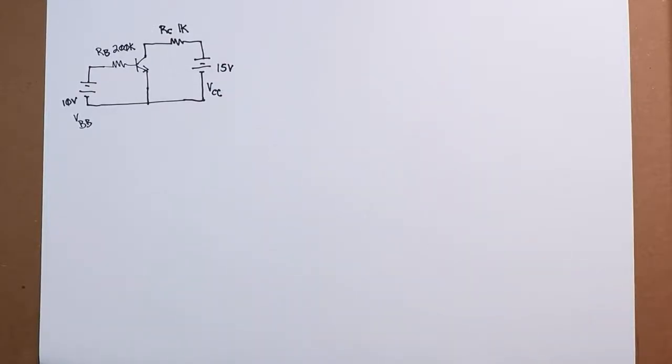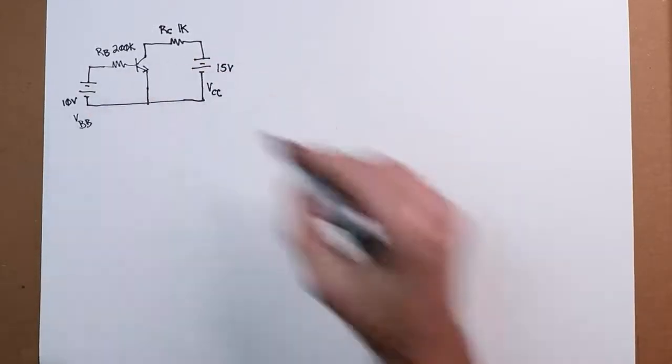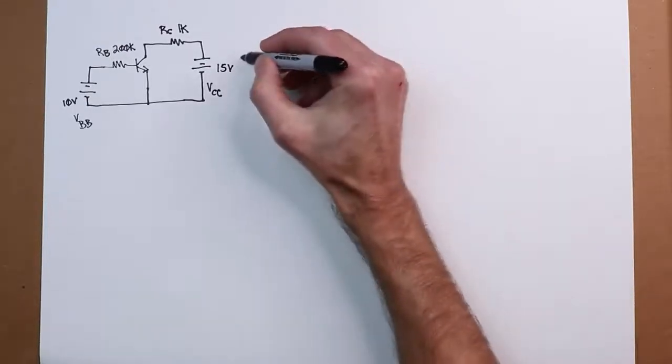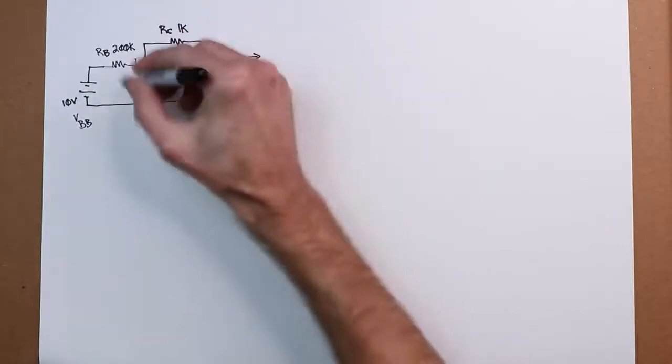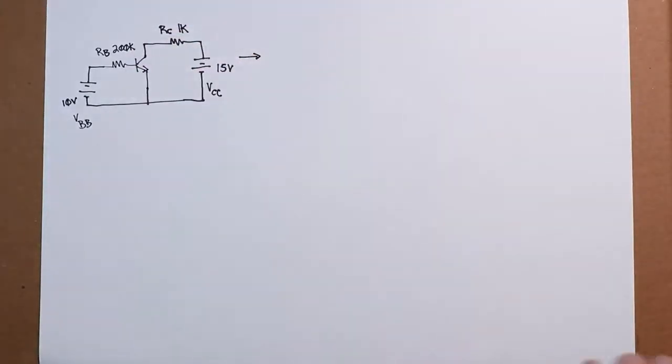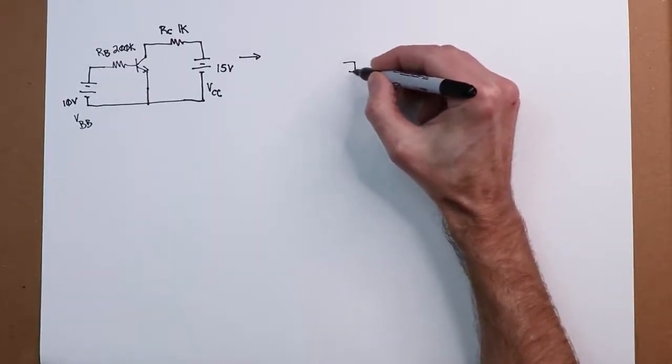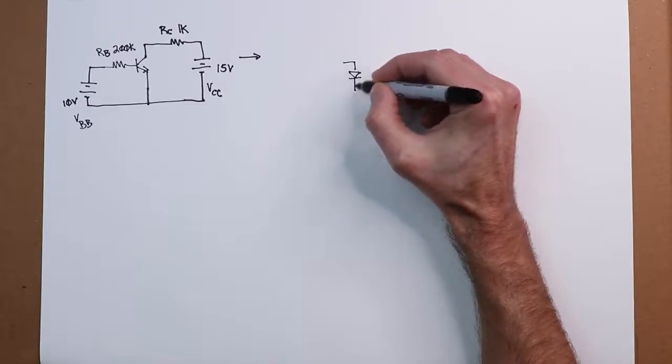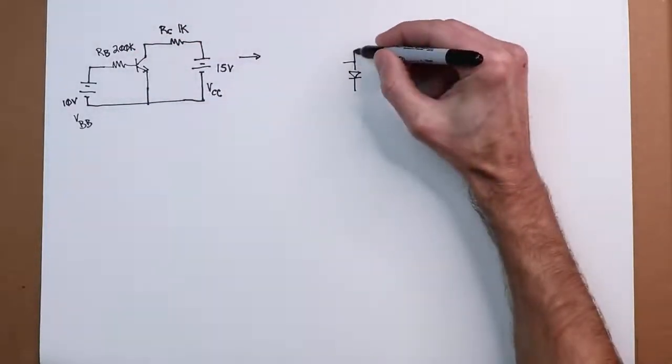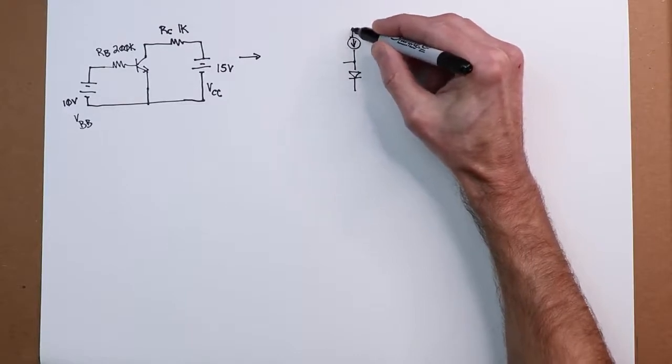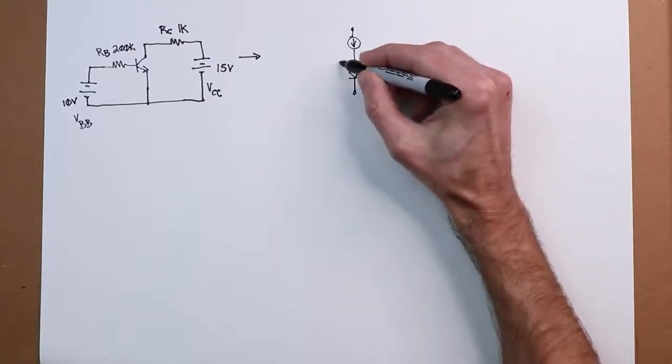So our goal here is to determine various currents and voltages in the circuit. How do we go about doing that? Well, what we're going to do is replace the transistor with our model. Remember, our simplified Ebers-Moll model consists of a diode, a forward bias diode for the base emitter, and a controlled current source up in the collector.